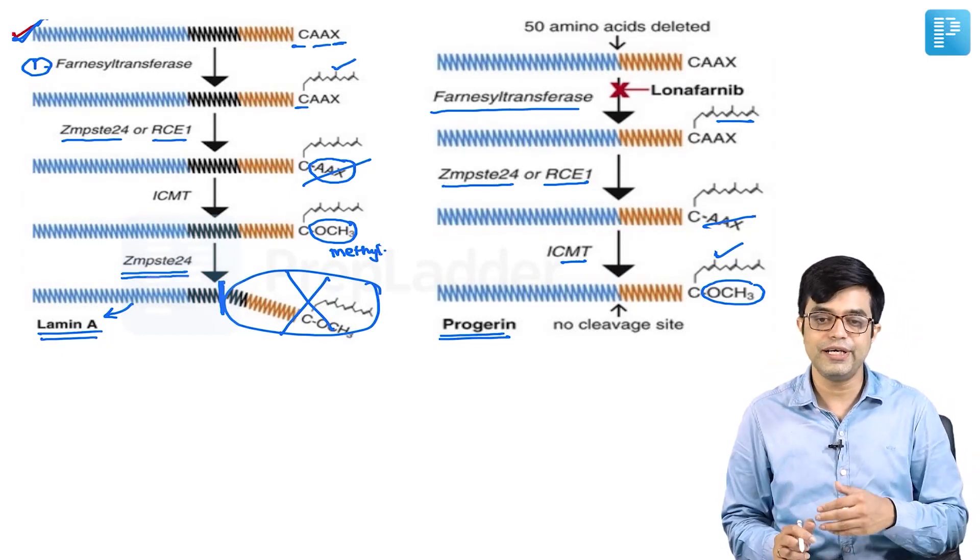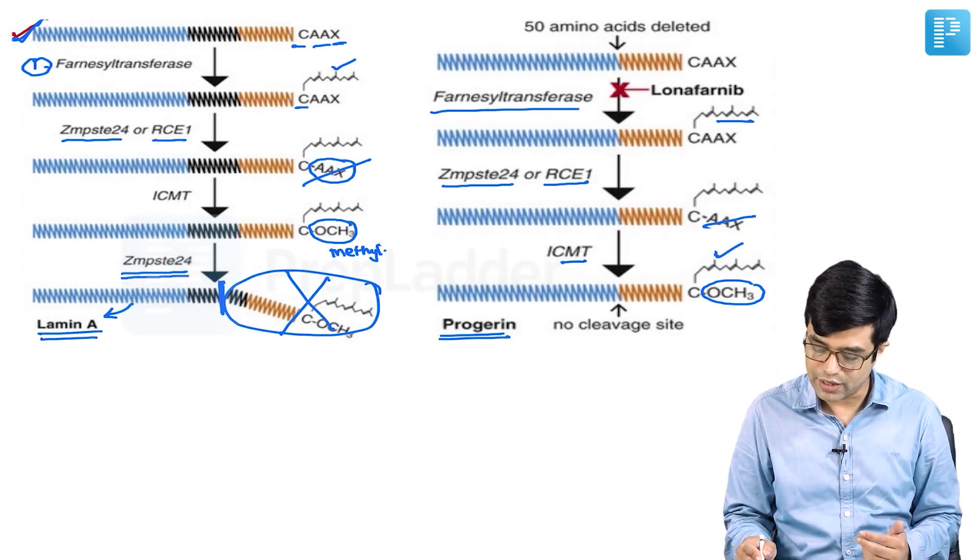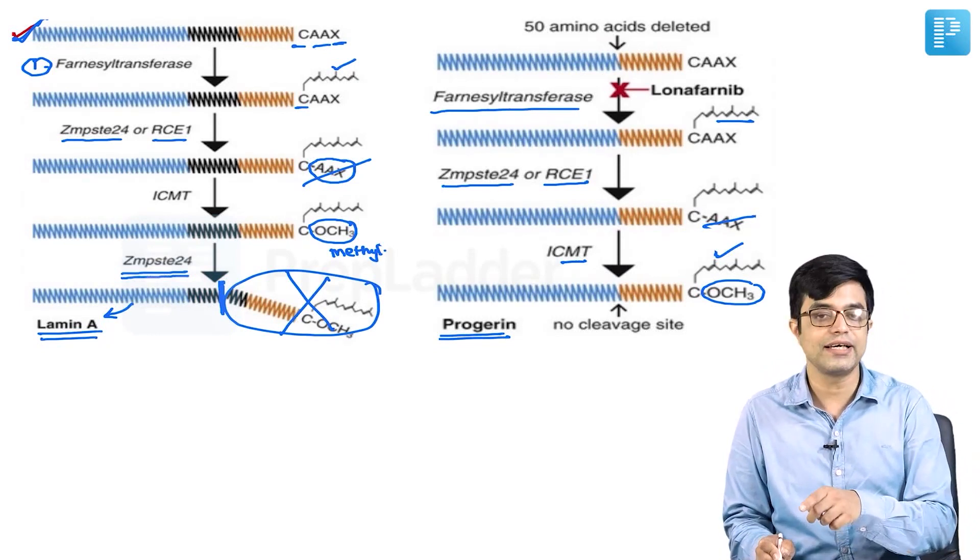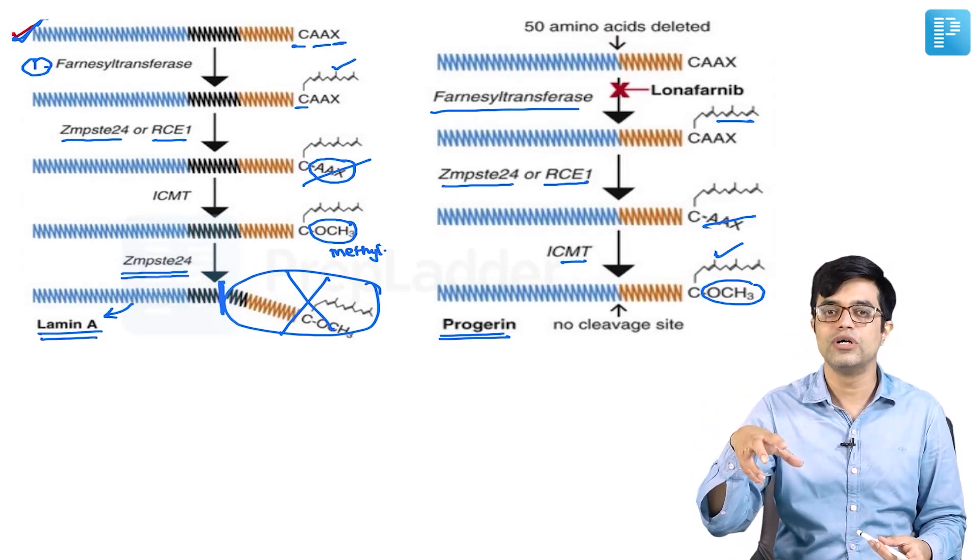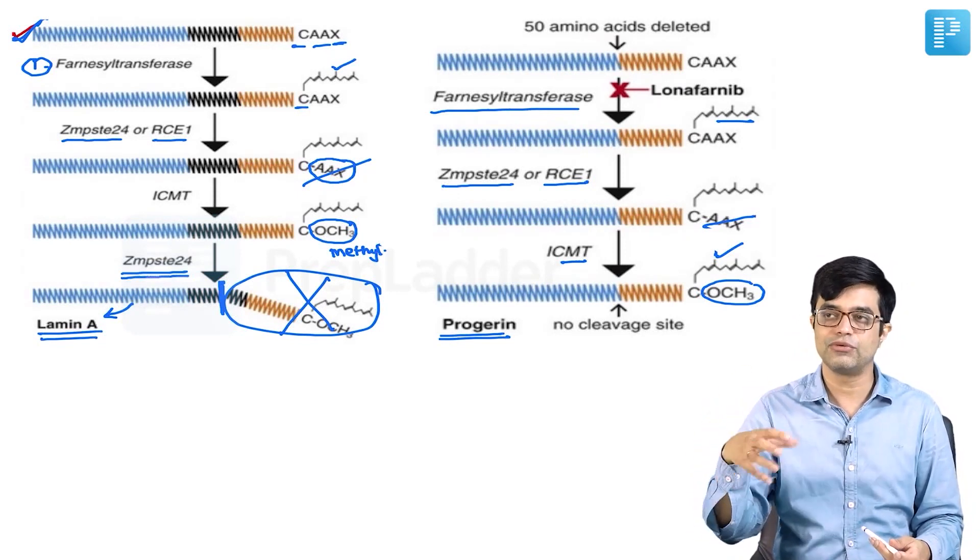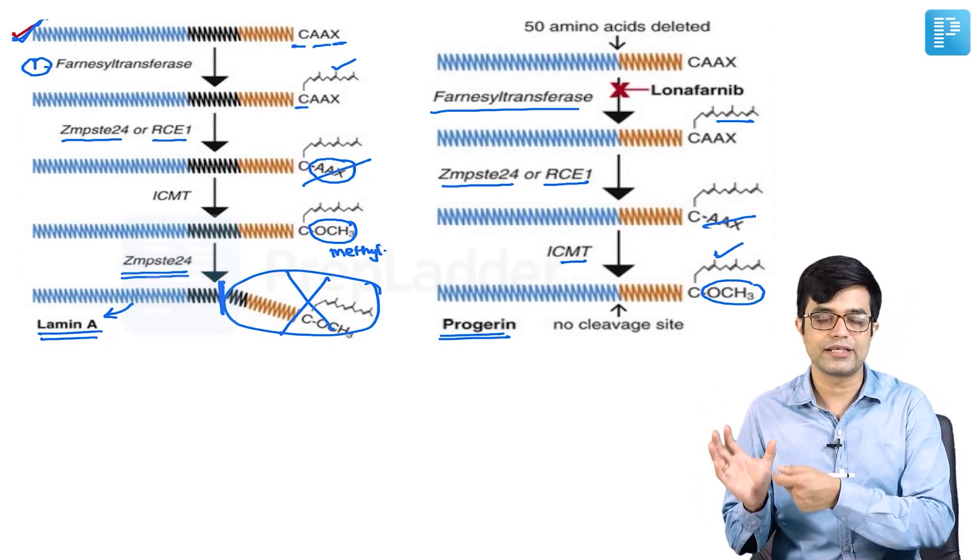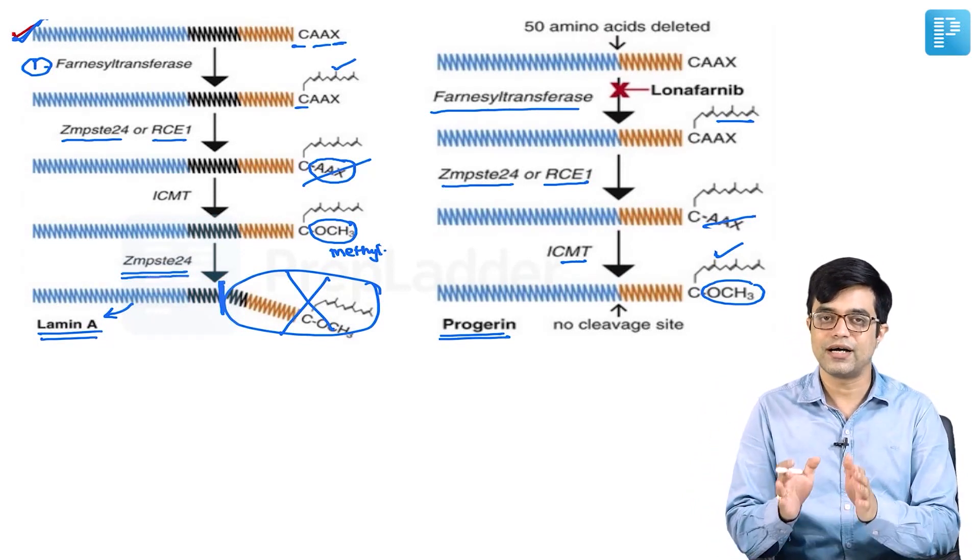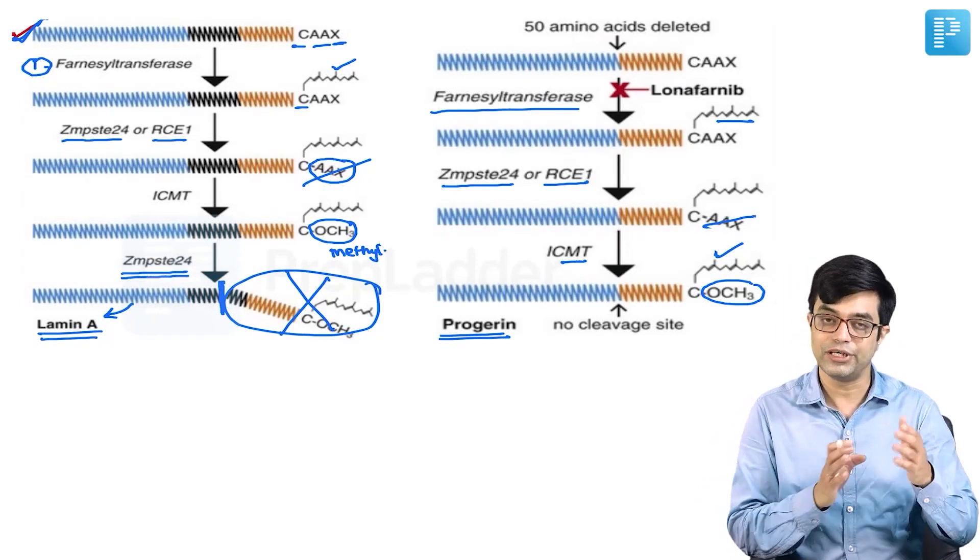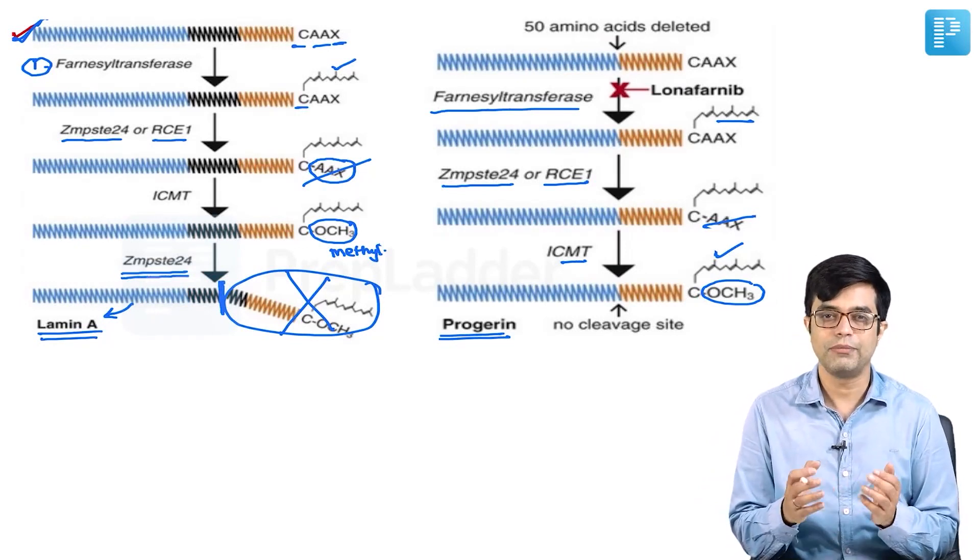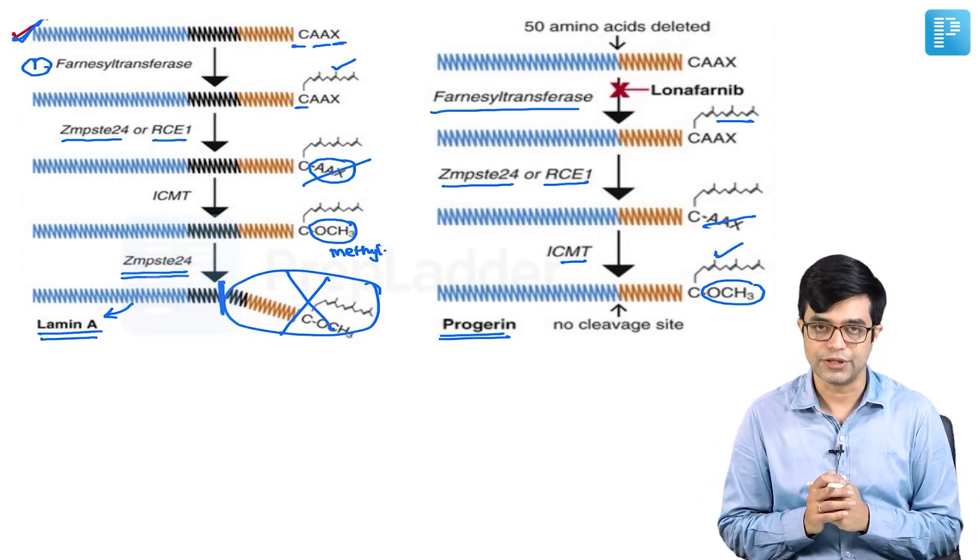There is a new drug which has been introduced called lonafarnib, which acts at this farnesylation step. It is one of the potential mechanisms how the disease can be modified by external therapies. This is how progeria happens. It is complicated, you need to listen to it twice and then try to inculcate these concepts in your mind.